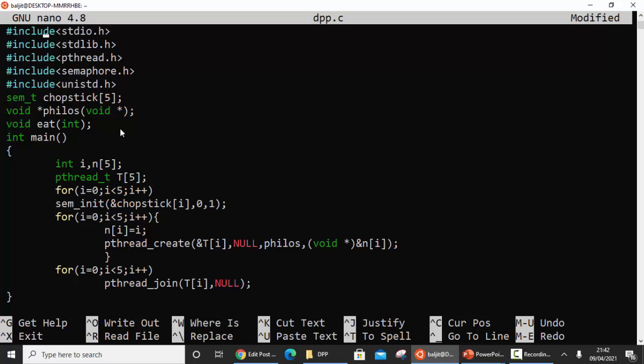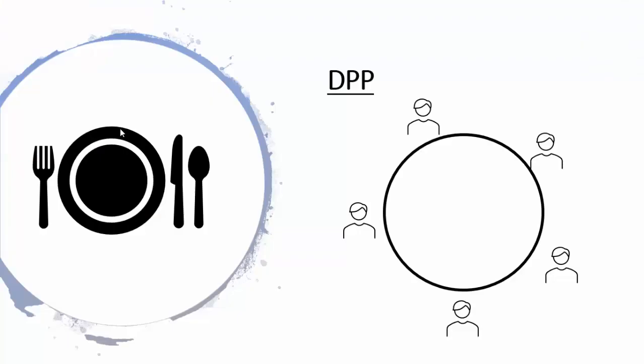I hope that you have already gone through the theoretical aspect of the dining philosophers problem. But I will explain the problem once again. The dining philosopher problem states that there are five philosophers and they do two things: they eat and they think.